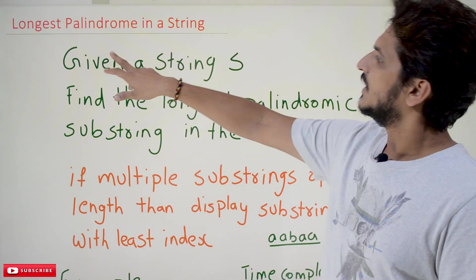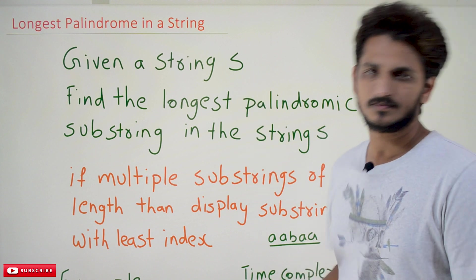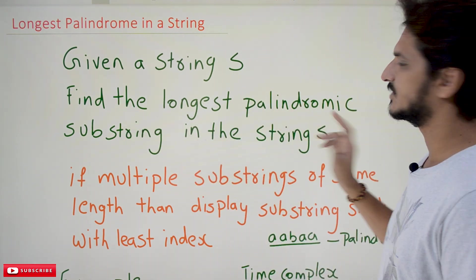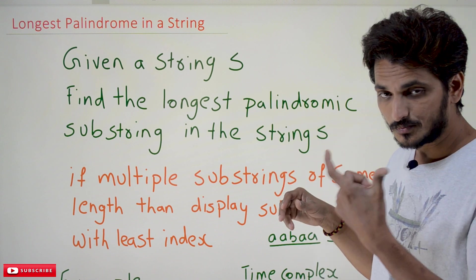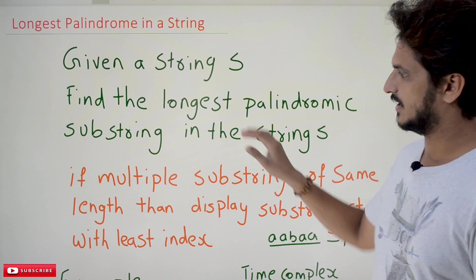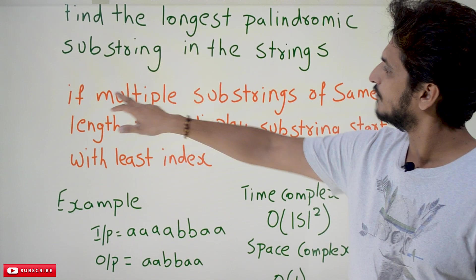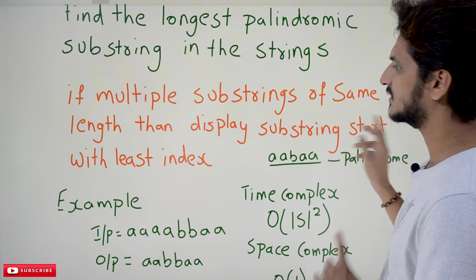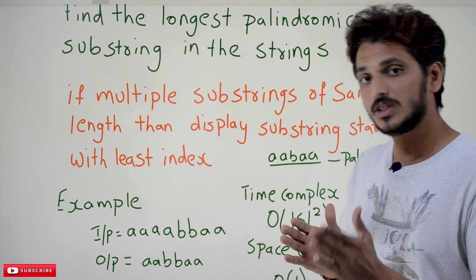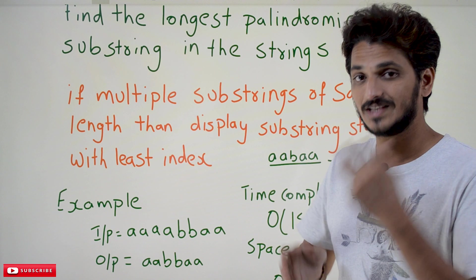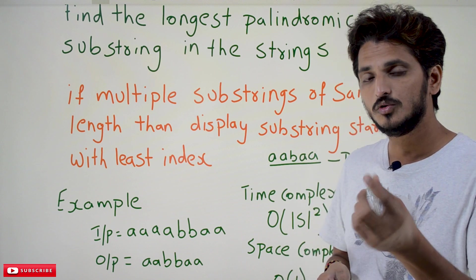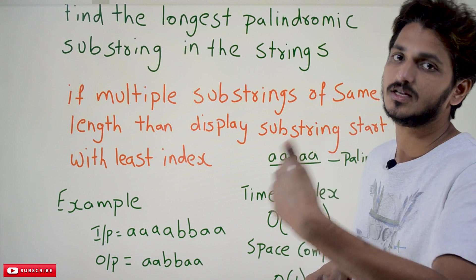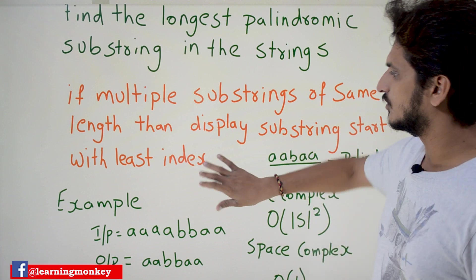Coming to today's class — given a string S, find the longest palindromic substring in the given string. We have to identify the longest possible palindromic substring. If multiple substrings of the same length exist, then display the substring starting with the least index — meaning the first occurrence you have to display.